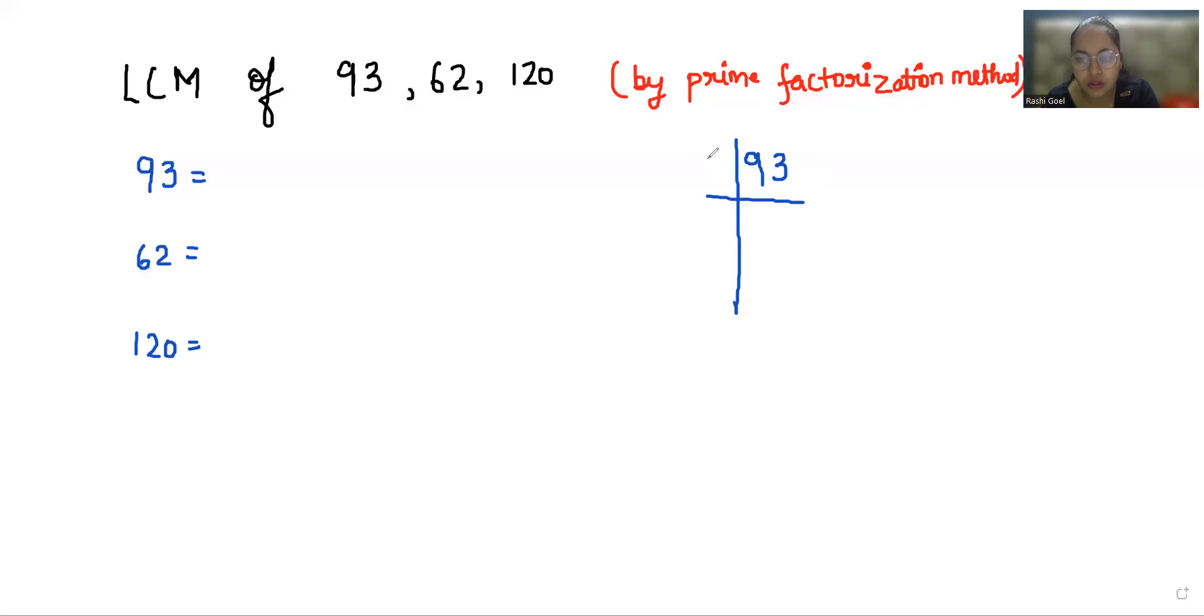We'll start with 3 because it cannot be divisible by 2. So this gave us 31 and 31 is again a prime number. So this gives us 1.